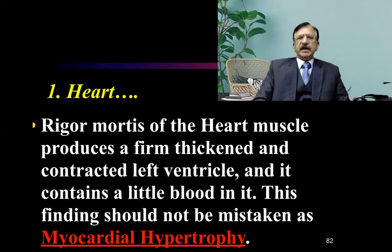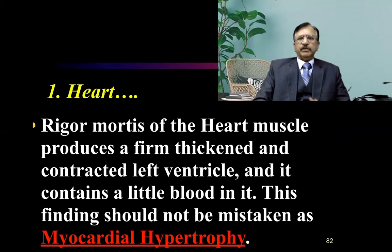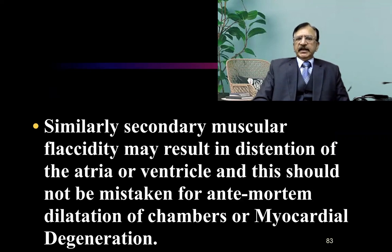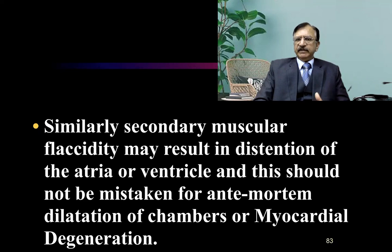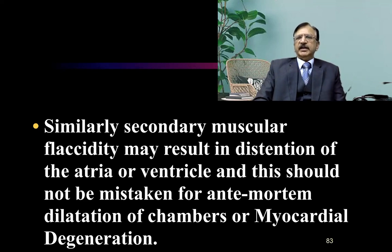Regarding special features of rigor mortis in the heart: rigor mortis of the heart muscle produces a firm, thickened, and contracted left ventricle containing little blood, and this finding should not be confused or mistaken for myocardial hypertrophy. Similarly, secondary muscle acidity may result in distension or dilatation of the atria and ventricle, and this should not be mistaken for ante-mortem dilatation of the chambers due to myocardial degeneration.